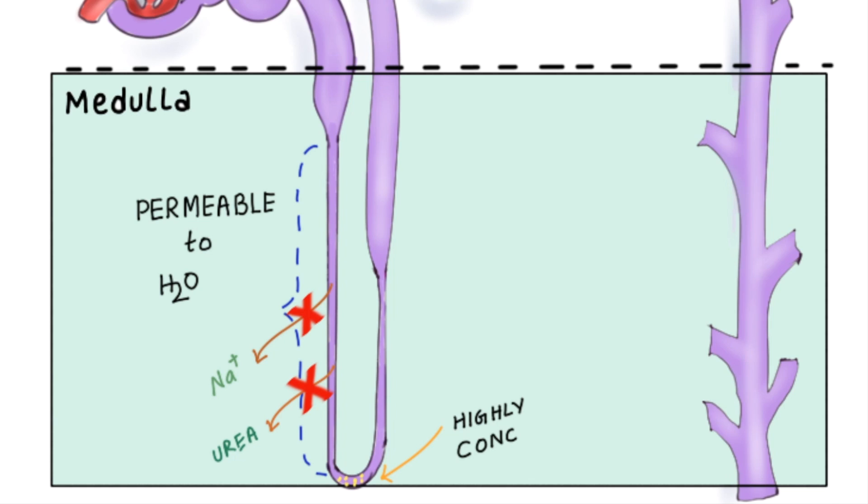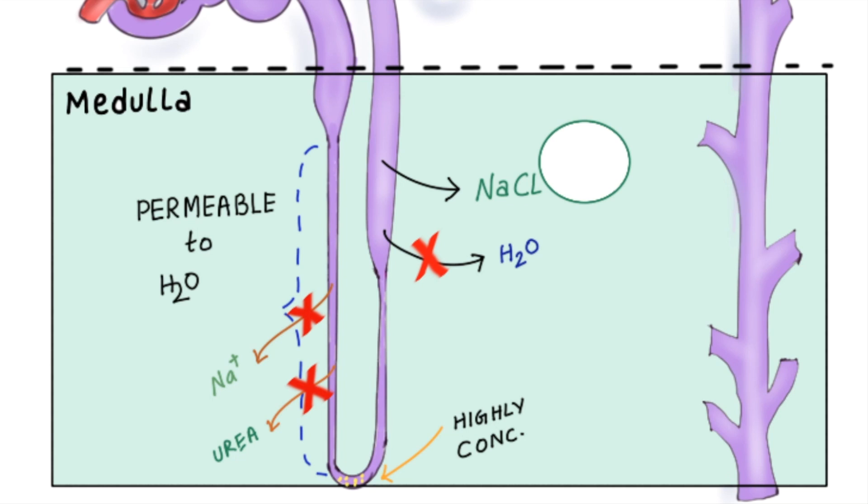However, the story is different in the ascending limb, whereby any water that remains cannot escape the filtrate. Sodium chloride, on the other hand, leaves passively from the thin ascending limb. So after this process has occurred, the filtrate is diluted. In total, approximately 25% of the sodium chloride is reabsorbed from the loop of Henle.